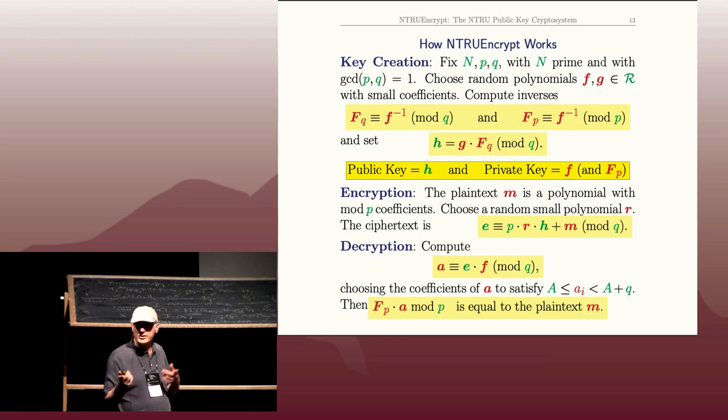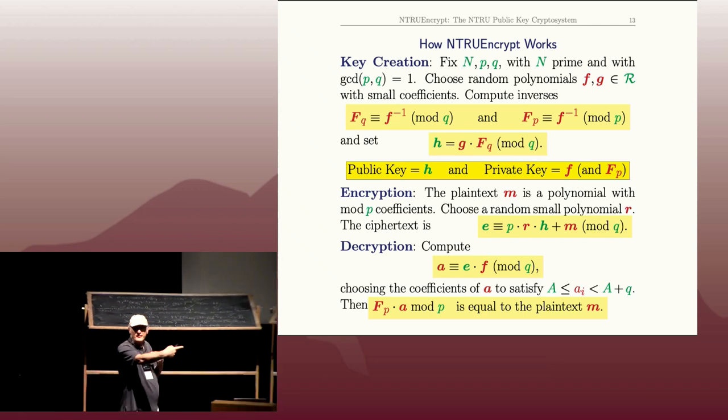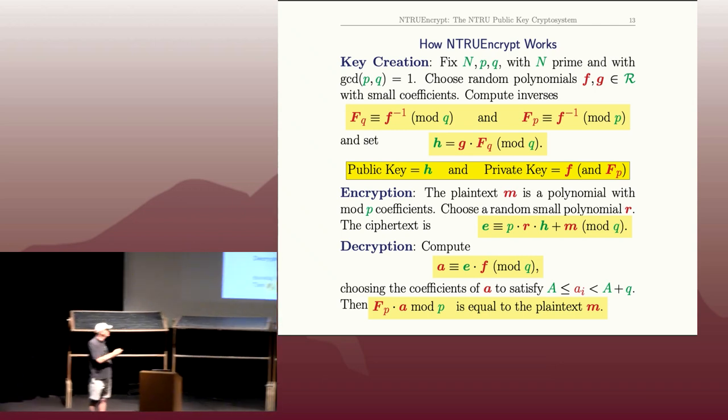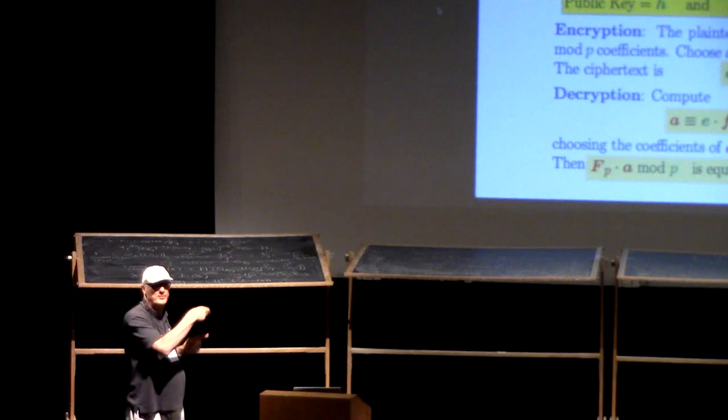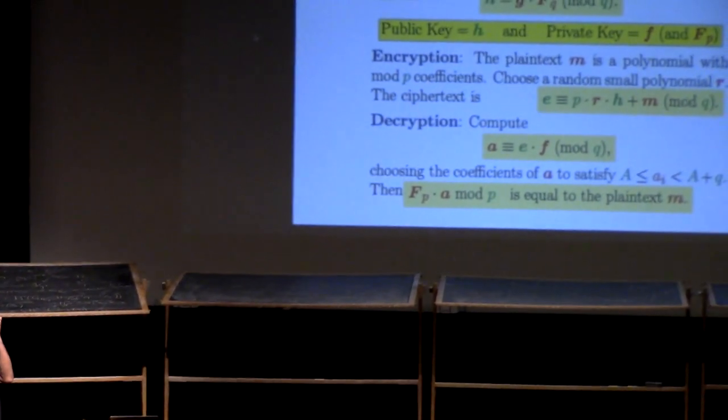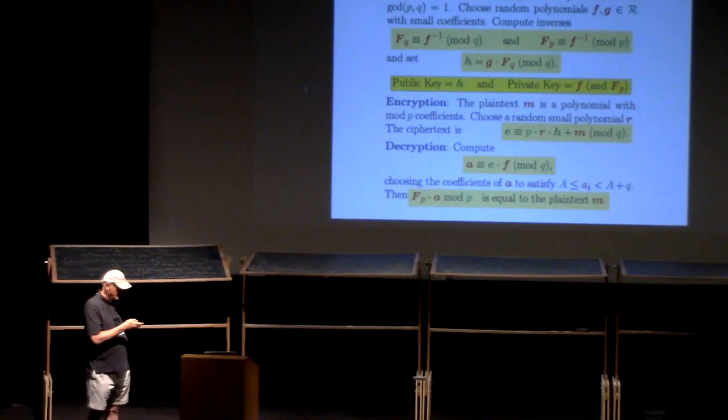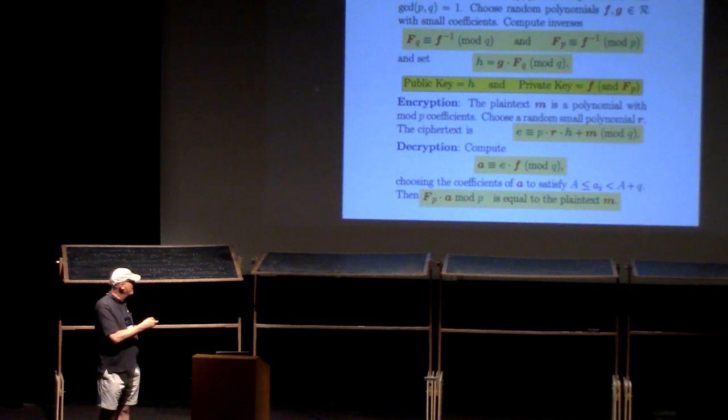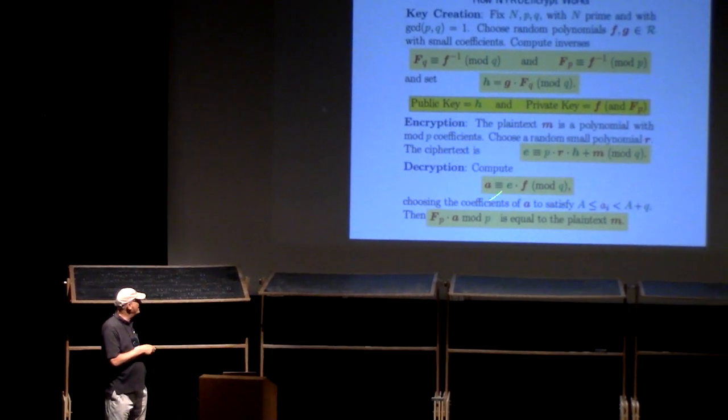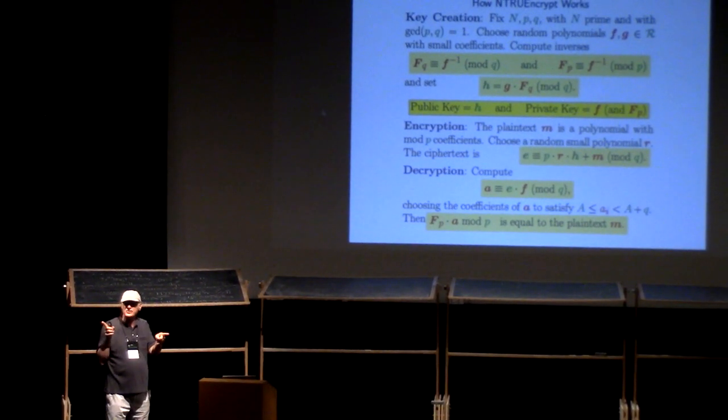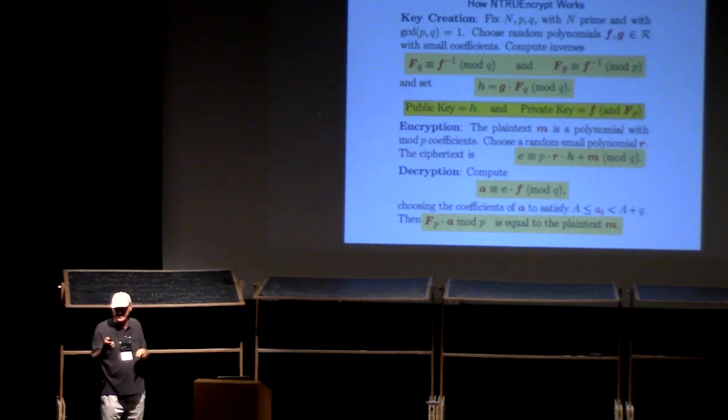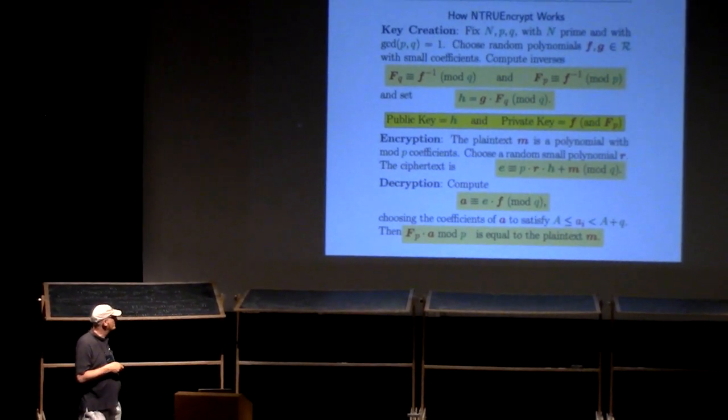But there's some ambiguity there. When you reduce mod q, you could... There are lots of coset representatives for integers when you do mod q. So it turns out that there's a particular interval of length q that she should reduce the coefficients into. It depends on the other parameters. If you set things up properly, then she should reduce the coefficients of a between minus q over 2 and q over 2, so sort of in a symmetric interval.